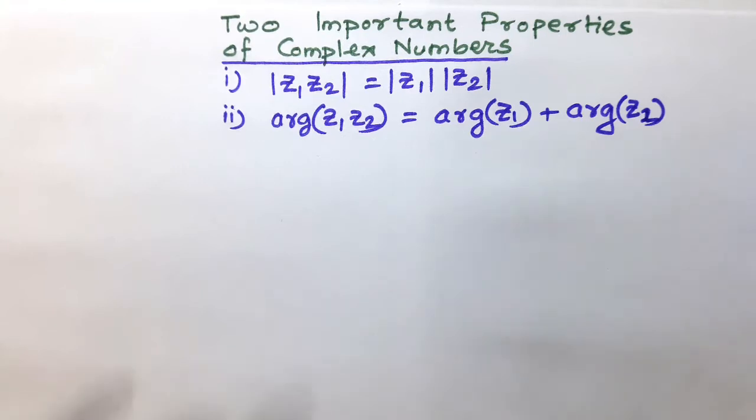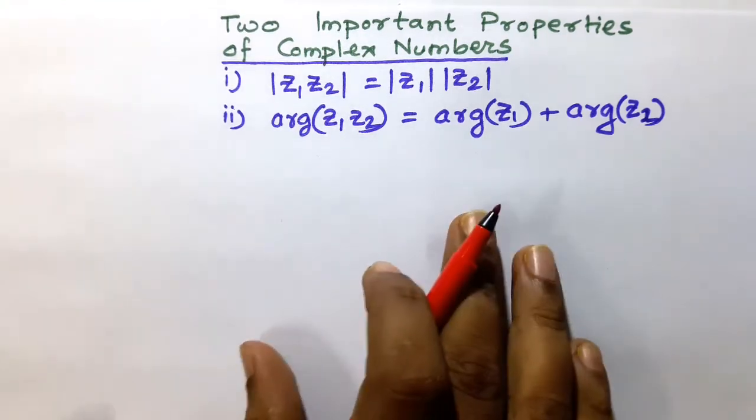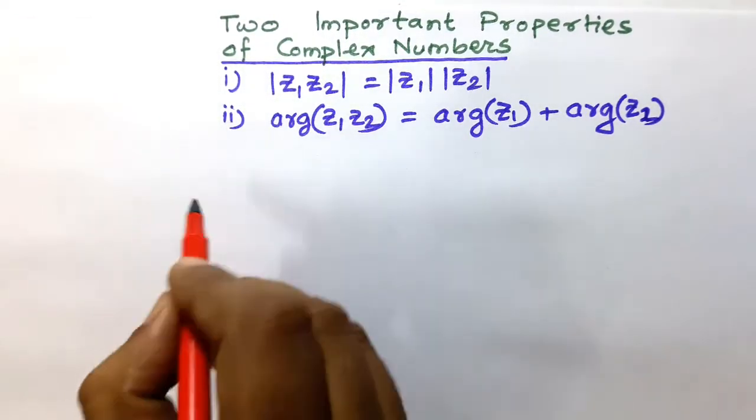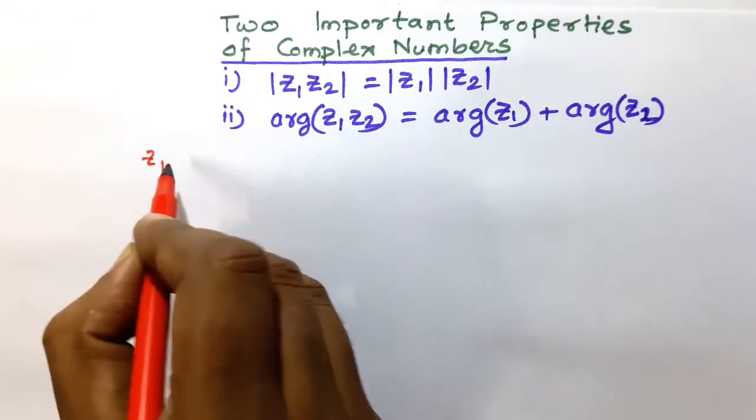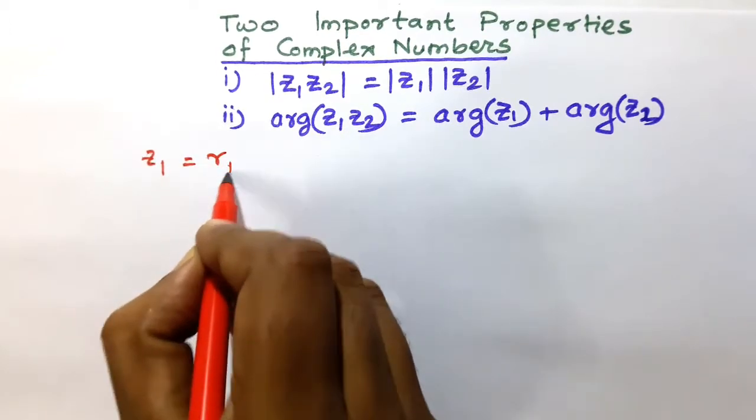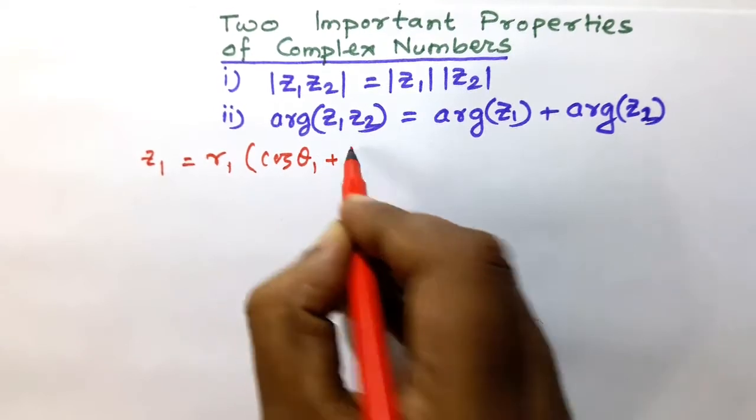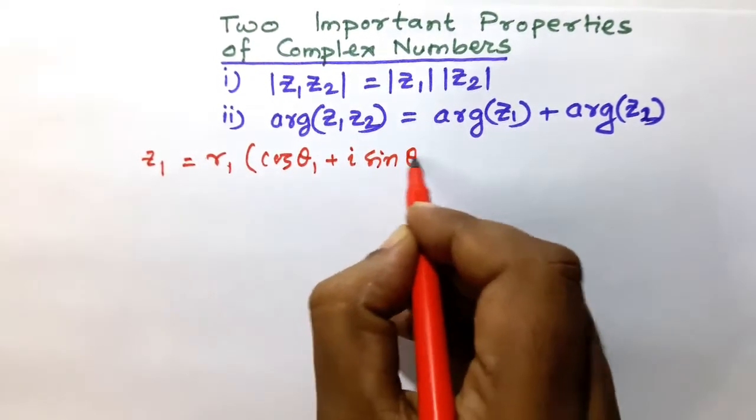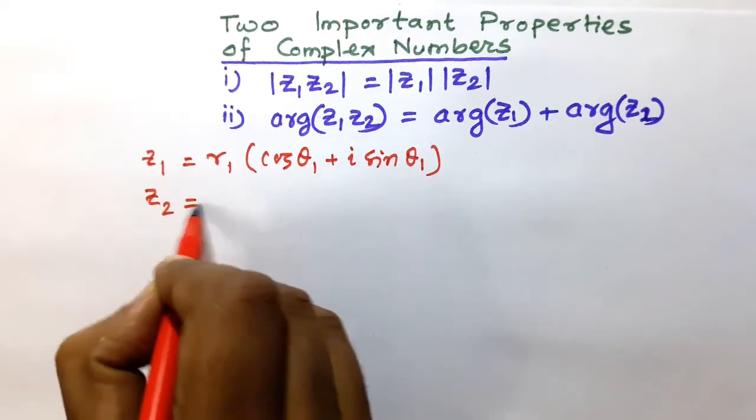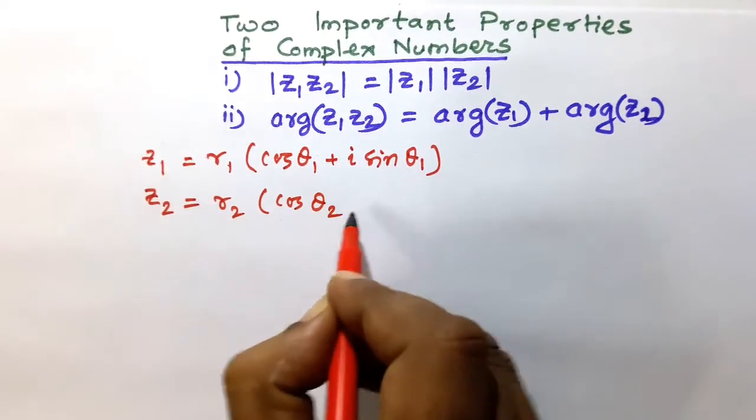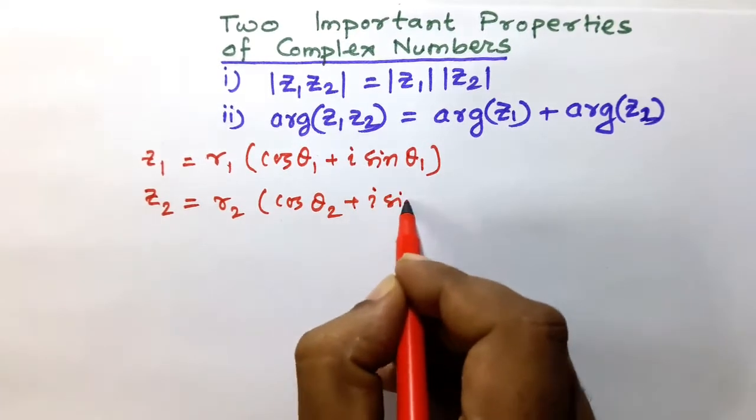Let us consider two complex numbers in polar form. They are respectively Z1 equals R1 times cos θ1 plus i sin θ1. Another one is Z2 equals R2 times cos θ2 plus i sin θ2.